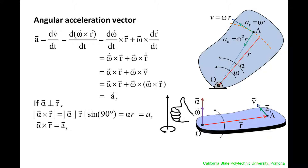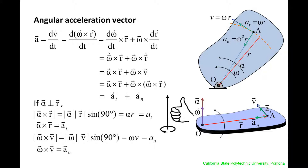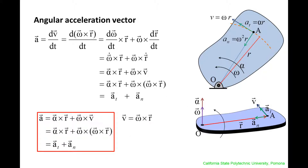Now let's examine the second term in the linear acceleration equation, omega cross v. We previously found that omega and v are perpendicular to each other. The magnitude of omega cross v is omega times v, which we know is the magnitude of the normal component of the linear acceleration. Using the right-hand rule, omega cross v points toward the axis of rotation, in the same direction as the normal component of the linear acceleration a sub n. Therefore, omega cross v is equal to the normal component of the linear acceleration. Here is a summary of the relationships between the linear velocity vector, angular velocity vector, linear acceleration vector, angular acceleration vector, and position vector for rotational motion.